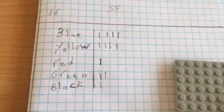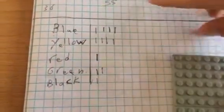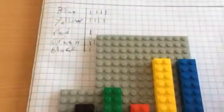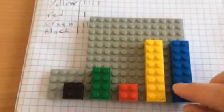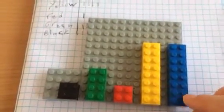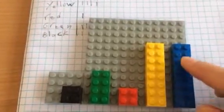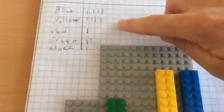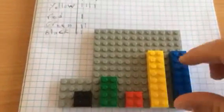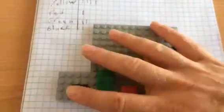The next student has chosen to collect some data on favourite colour, which is nice. And again they use the same scale, so a block of four is one person. Four for yellow, one for red, two for green and one for black.